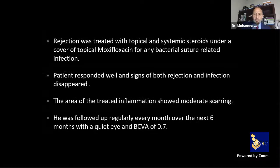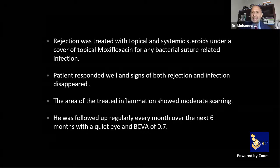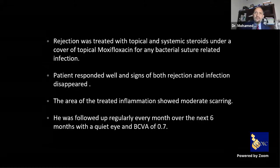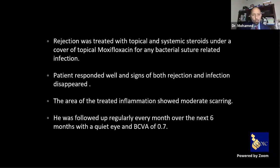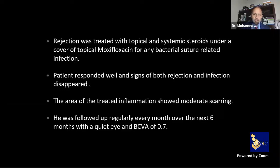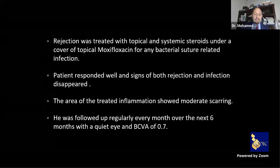Rejection was treated with topical and systemic steroids under cover of topical moxifloxacin for potential suture-related bacterial infection. The patient responded very well, and signs of rejection and infection disappeared. However, as with uveitis, repeated rejection episodes lead to sequelae — usually fibrosis in the wound and irregular astigmatism. The area of treated inflammation showed moderate scarring.